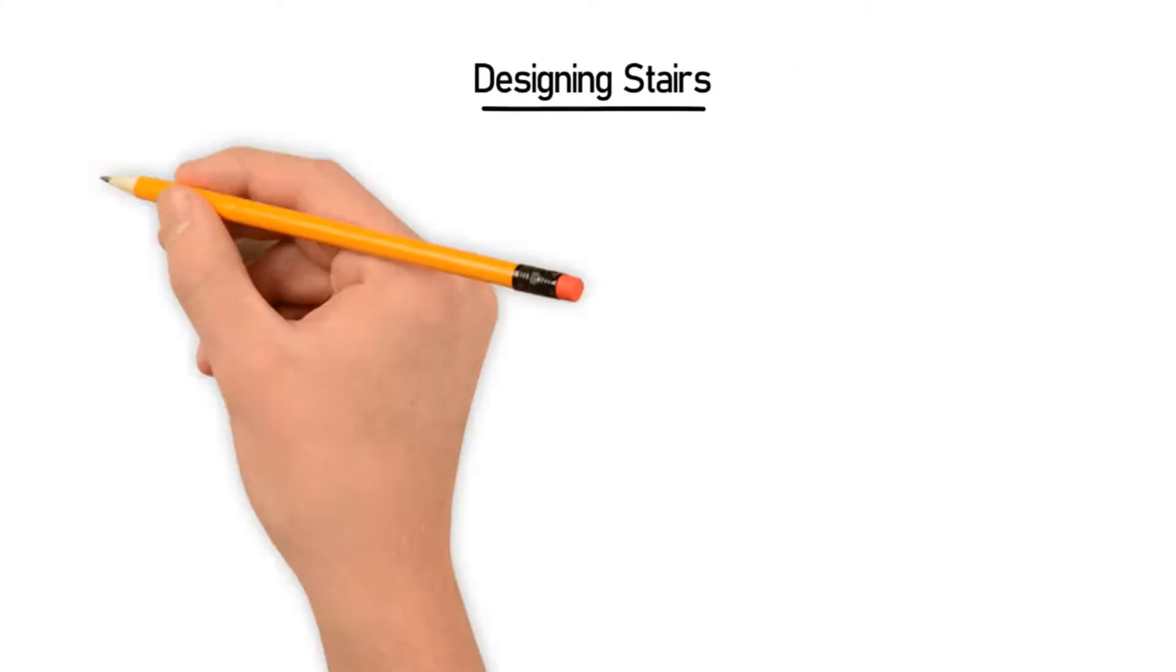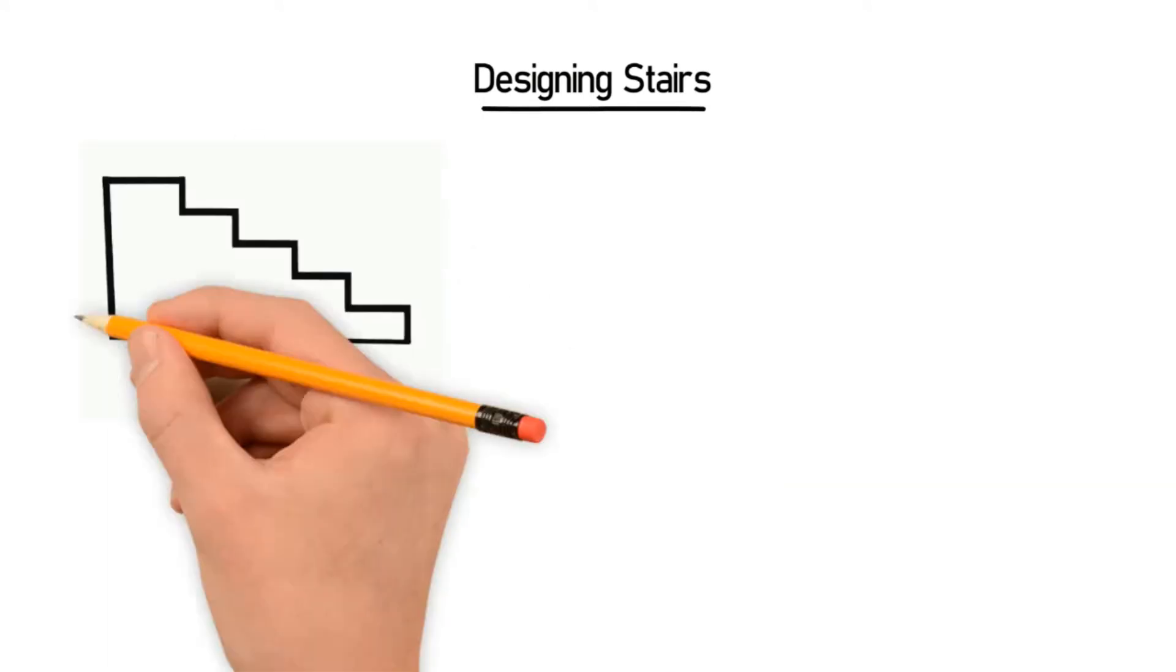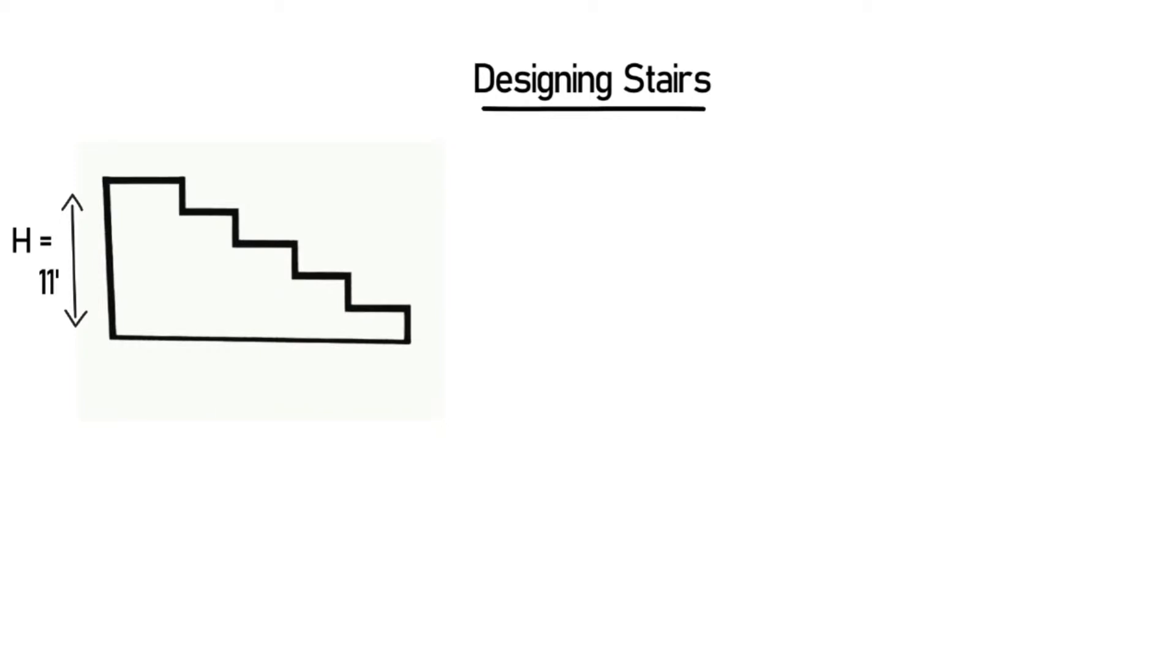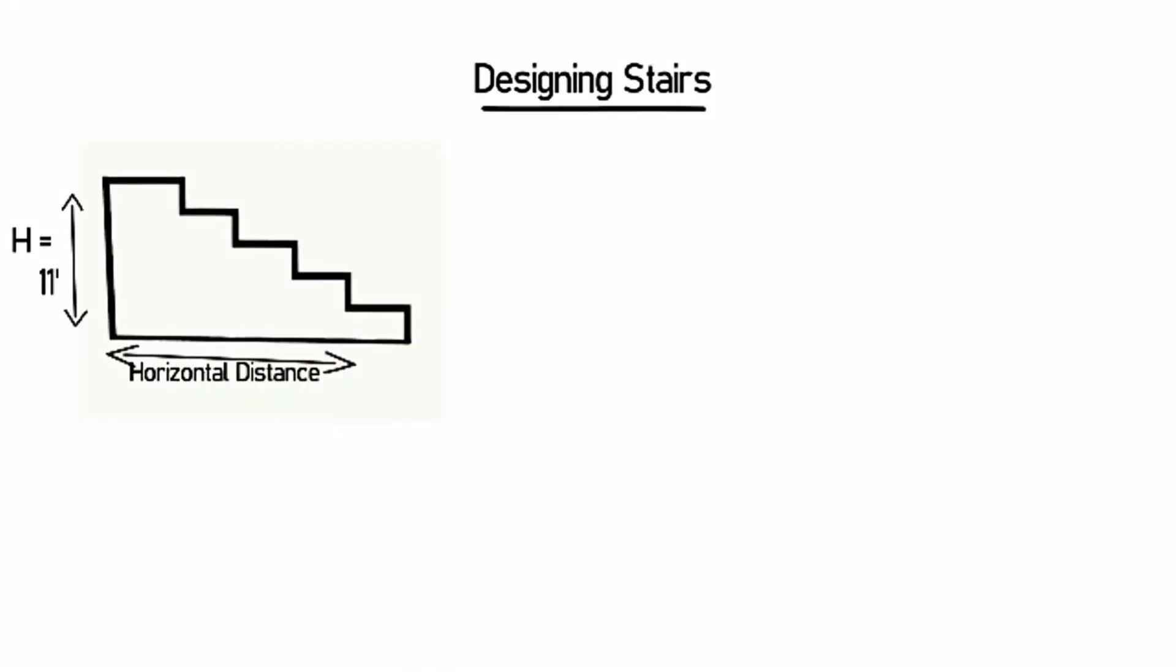Designing stairs. Let's take an example of a stair. The height is 11 feet, this area is the horizontal distance which is unknown, we will find it and the number of the stairs. Now before we start with the calculation, you need to know two terms used in the stair designs.